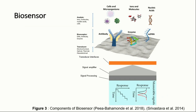A biosensor detects a target analyte by transforming the biological reaction to detectable signals. It is composed of three main components: bioreceptor, transducer, and output system. The signals attributed to the interaction between bioreceptors and the analytes are converted to visible signals which appear in the output system.